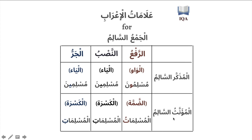For the Jama' Mu'annath Al-Salim — the sound feminine plural — for Raf'a it takes the original sign, the Dhamma (Al-Muslimat is Marfu' with Dhamma). But for Nasb, it takes a secondary sign — a Kasra — so Muslimati is Mansoob with a Kasra instead of a Fatha. And likewise, the sign for Jarr is also a Kasra, so the context distinguishes the two.